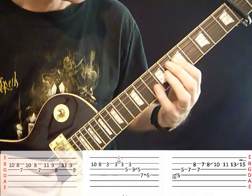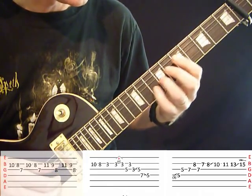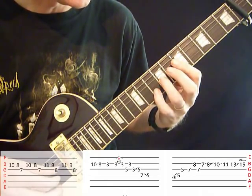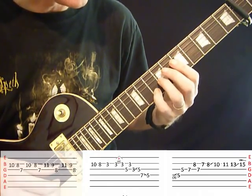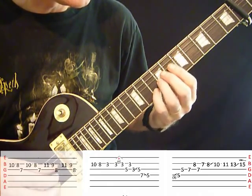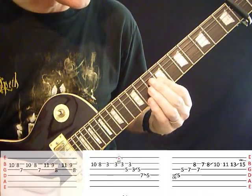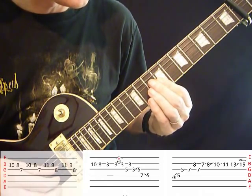Slide up, bar 5th fret, 3rd finger on the 7th fret of the G. Now 4th finger on the 8th fret of the B string. Now you've got to switch to a bar on the 7th fret there.